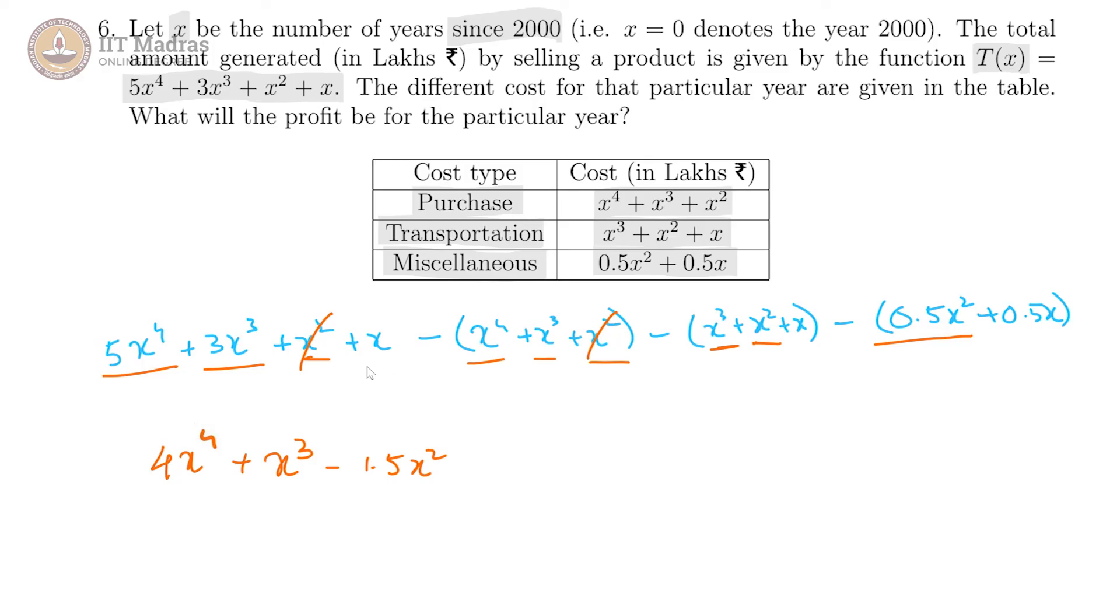And lastly, the x term there is x and minus x which cancels off and minus 0.5x. So minus 0.5x. This would be the total profit for that year.